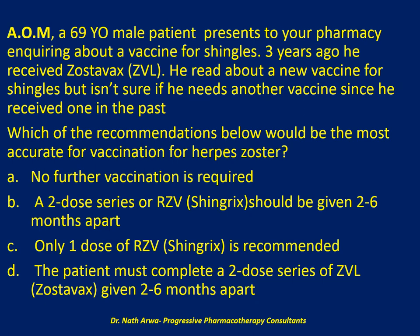The next question reads: Mr. AOM, a 69-year-old male patient, presents to your pharmacy inquiring about a vaccine for shingles. Three years ago, he received Zostavax (ZVL), and he read about a new shingles vaccine but isn't sure if he needs another vaccine since he received one in the past. Which recommendation would be most accurate for herpes zoster vaccination? Is no further vaccination required? Or should a two-dose series of RZV (Shingrix) be given two to six months apart? Or is only one dose of RZV recommended? Or must he complete a two-dose series of ZVL given two to six months apart? I'll give you 10 seconds to choose the correct answer.